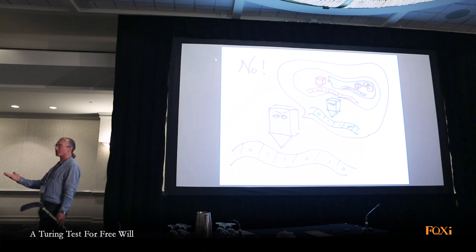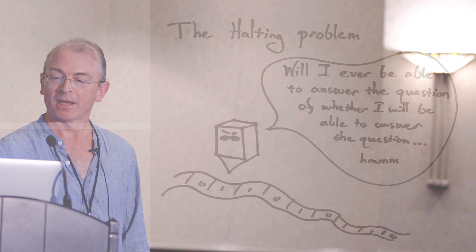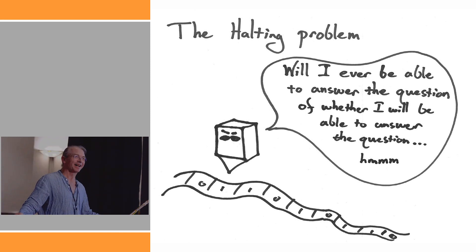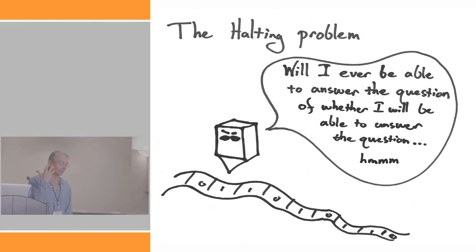In particular, such systems won't be able to predict what their decisions are going to be — if the decision is made by some logical process, they won't even know if they're going to make a decision at all. You can summarize the halting problem as: 'Will I ever be able to answer the question of whether I will be able to answer the question...?' — an infinite loop. This is the essence of our inability to predict what we're going to do. It's also true of the operating system of your smartphone.